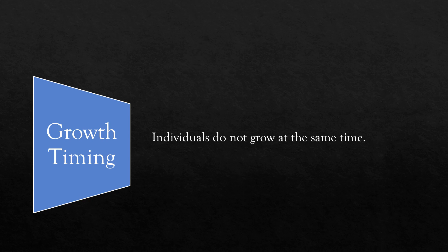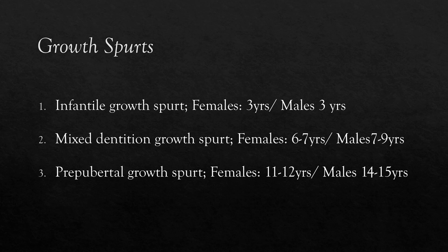Growth timing is important since it directly affects the results of orthodontic treatment, especially orthopedic applications. All individuals are unique and don't grow at the same rate or at the same time. One should also know that growth doesn't show uniform progress; the body parts don't enlarge at the same rate and same increment per year. Growth is especially rapid during intrauterine life. Considering the whole postnatal growth period, there are three main spurt periods: infantile, mixed dentition, and prepubertal.